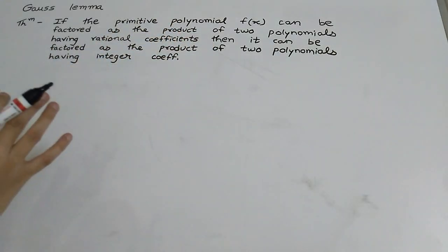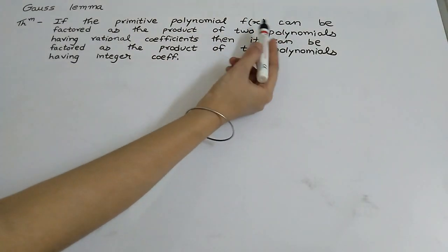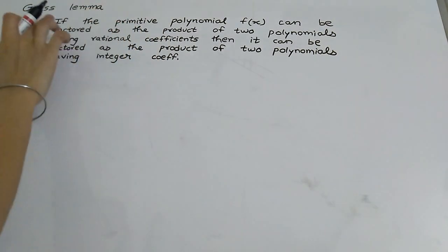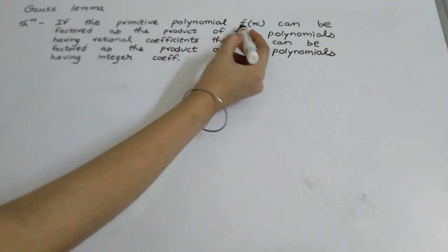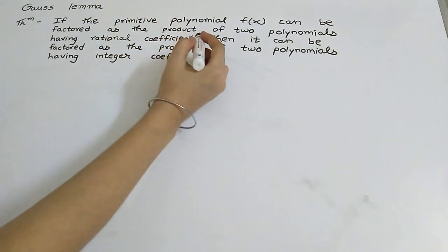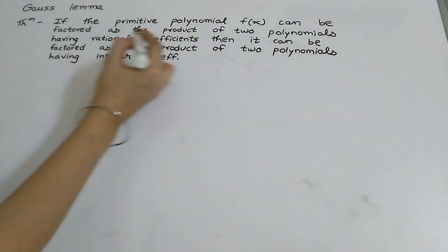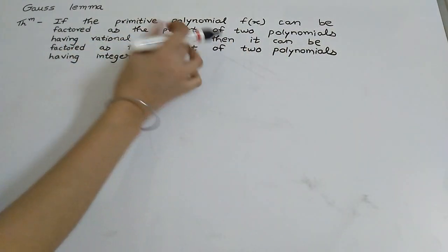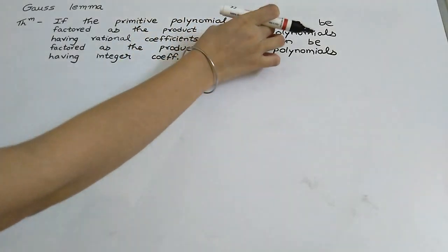What a primitive polynomial is, we already saw in the previous video. So what is being said here is: if the primitive polynomial f(x) can be factored as the product of two polynomials having rational coefficients — means we can write this primitive polynomial f(x) as a product of two polynomials having rational coefficients.